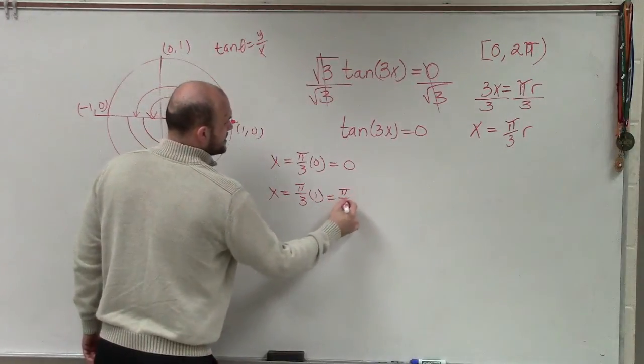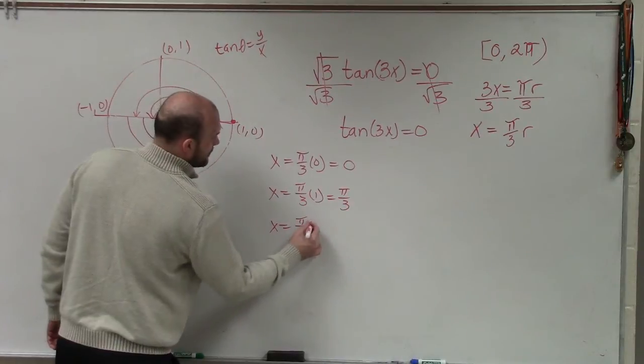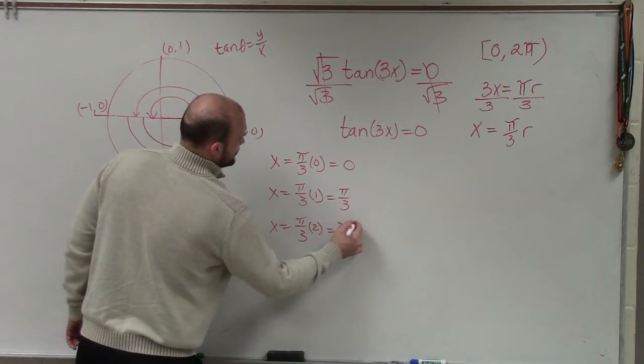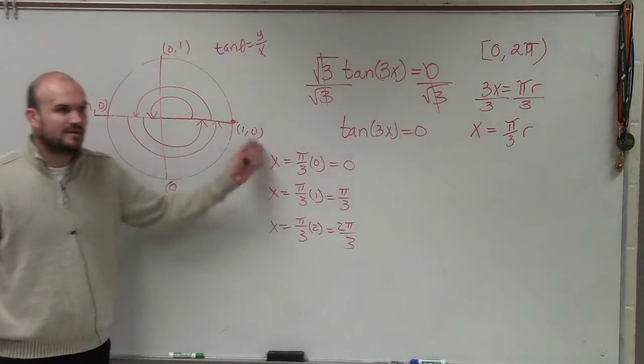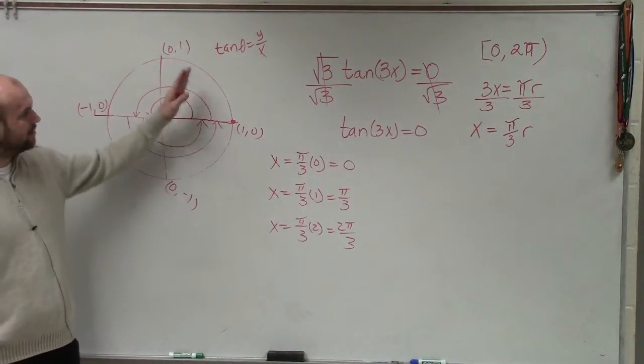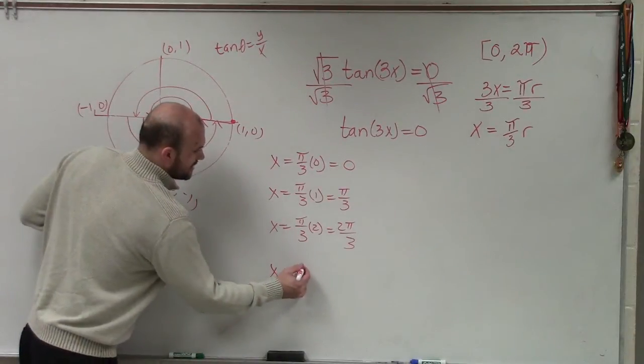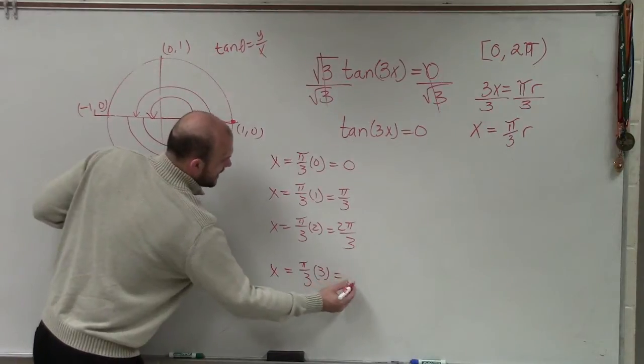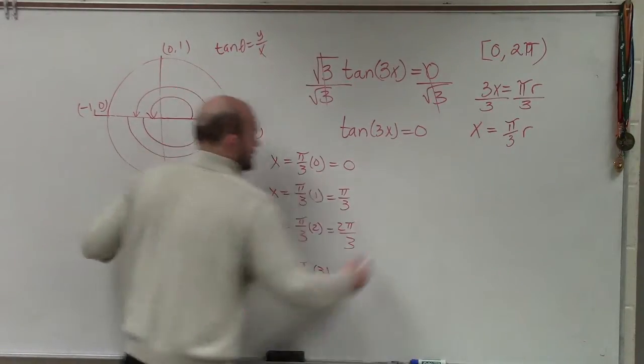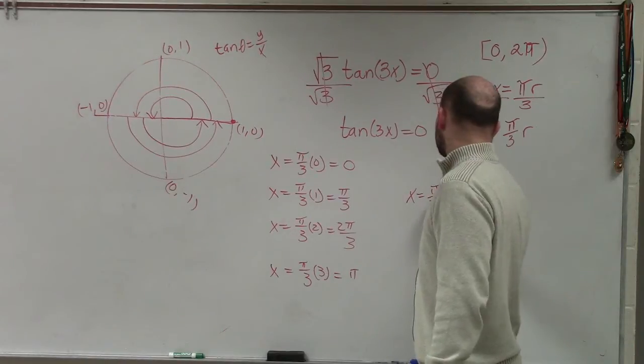It's 2π thirds. And are these angles all within 0 and 2π? Yeah, 1 third, 2 thirds. And then I can just keep on going. Then I can do, what if π thirds times 3? Well, that equals π. Then I can go, what about if r equals 4? Well, that's 4π over 3. What if it equals 5? That's 5π over 3.